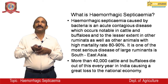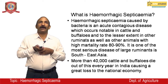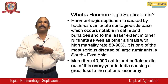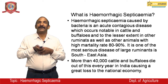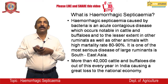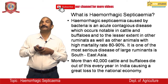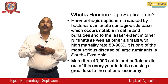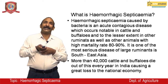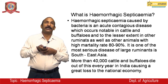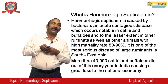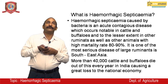Hemorrhagic septicemia is an acute contagious disease caused by bacteria, occurring notably in cattle and buffaloes and to a lesser extent in other ruminants, with a high mortality rate of 80–90%. It is one of the most serious diseases of large ruminants in South East Asia, with more than 40,000 cattle or buffaloes dying every year in India, causing great loss to the national economy.